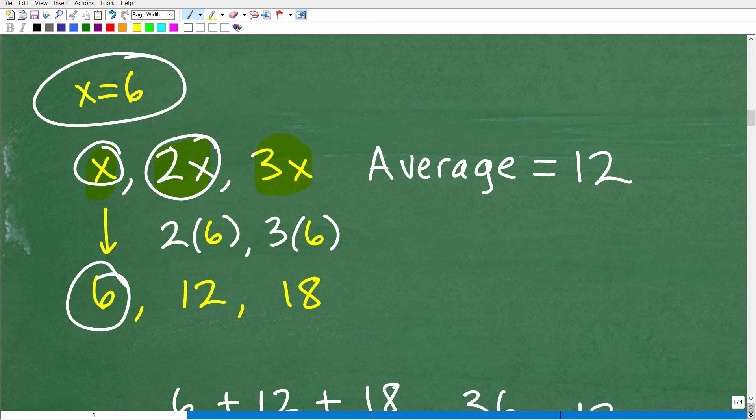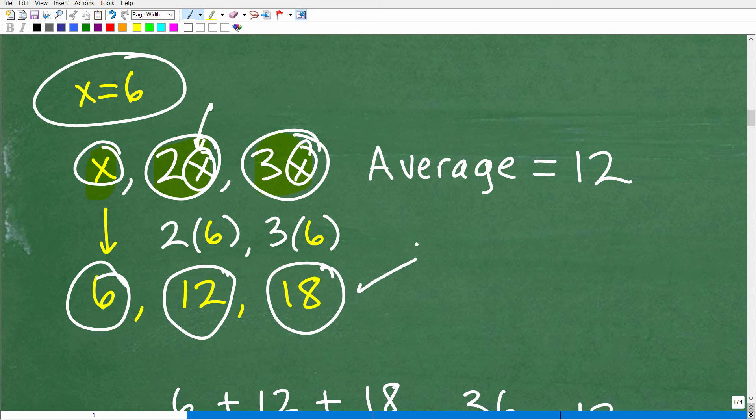Now, I have to find this second number, 2x, which is what? Well, 2x, again, x is 6. So that's going to be 2 times 6. So 2 times 6 is 12. And then our third number is going to be 3 times x. Again, x is 6. So 3 times 6 is 18. So these are our three numbers.